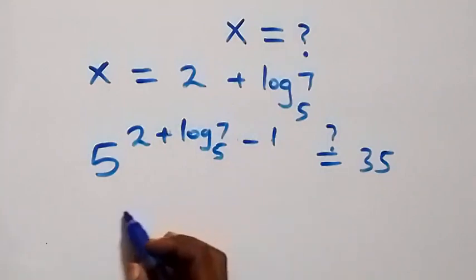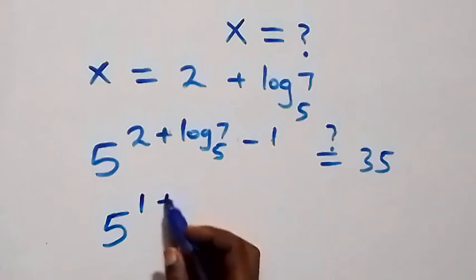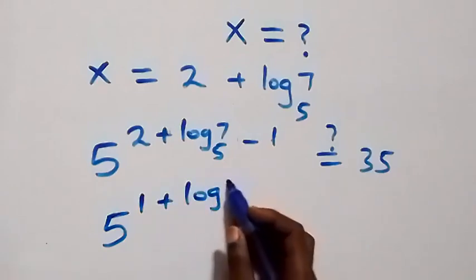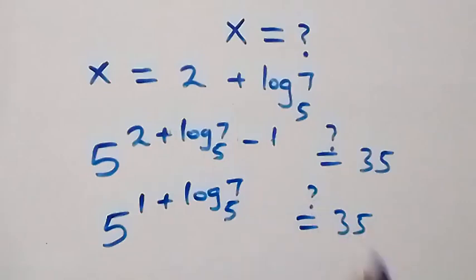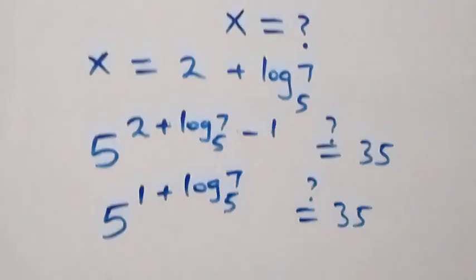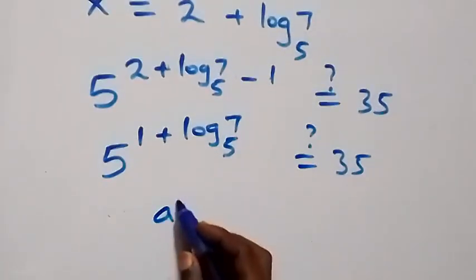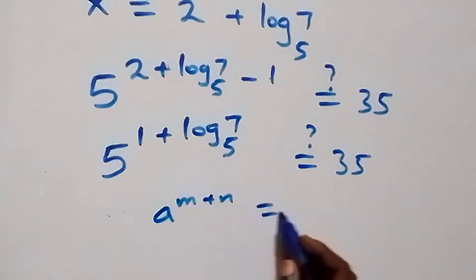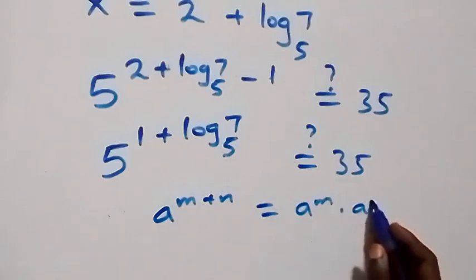Simplifying the exponent: 2 minus 1 equals 1, so we have 5 raised to power 1 plus log 7 to base 5, which should equal 35. From the law of indices, a raised to power m plus n equals a raised to power m times a raised to power n.